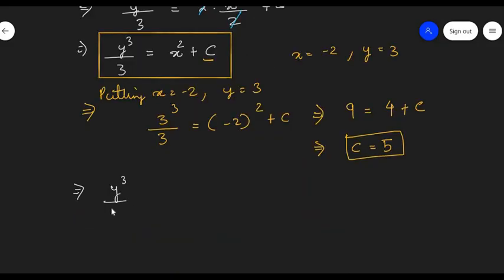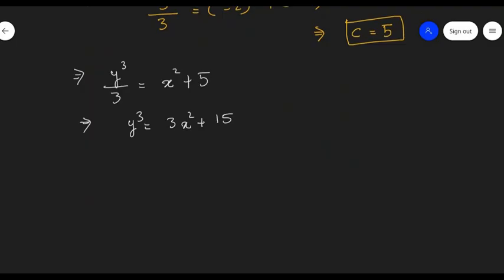Y cubed upon 3 equal to x squared plus 5. Let's take 3 to the right hand side. So we will get y cubed equal to 3x squared plus 15, and this is the required curve. This is the required equation of the curve at the point (-2, 3).